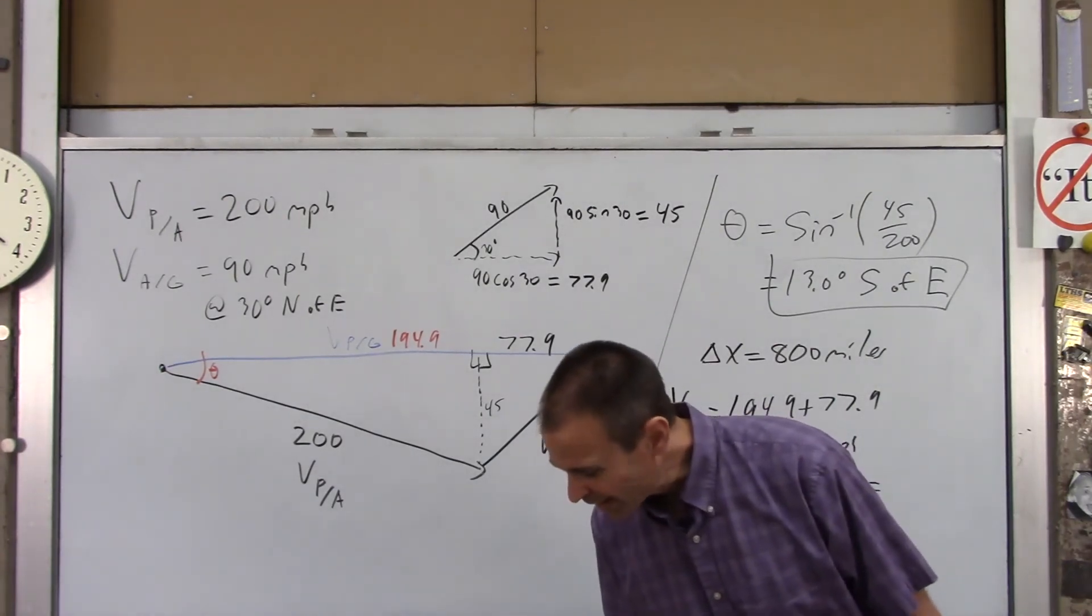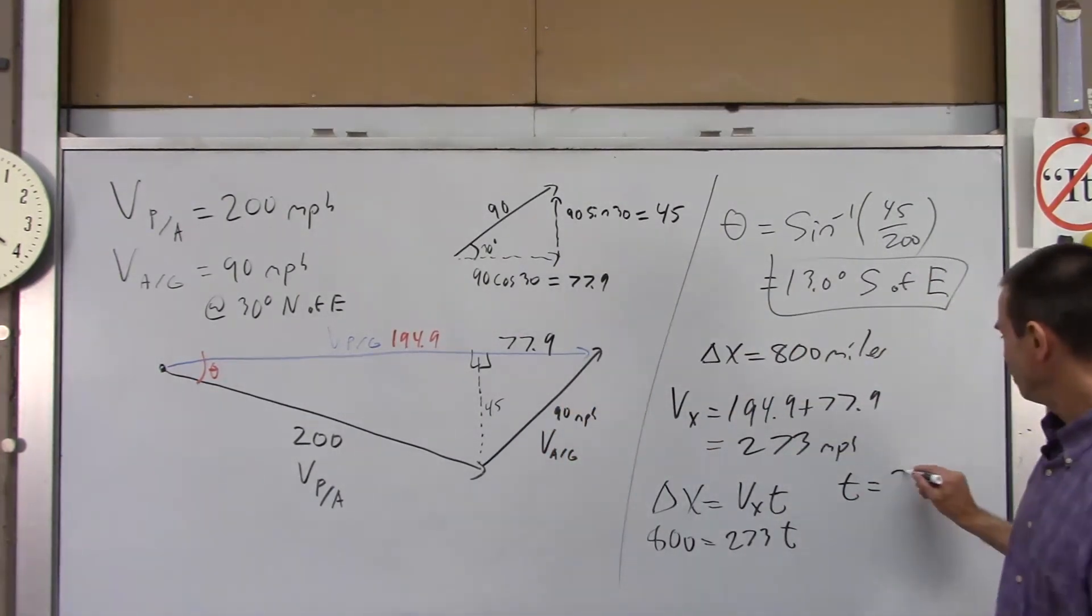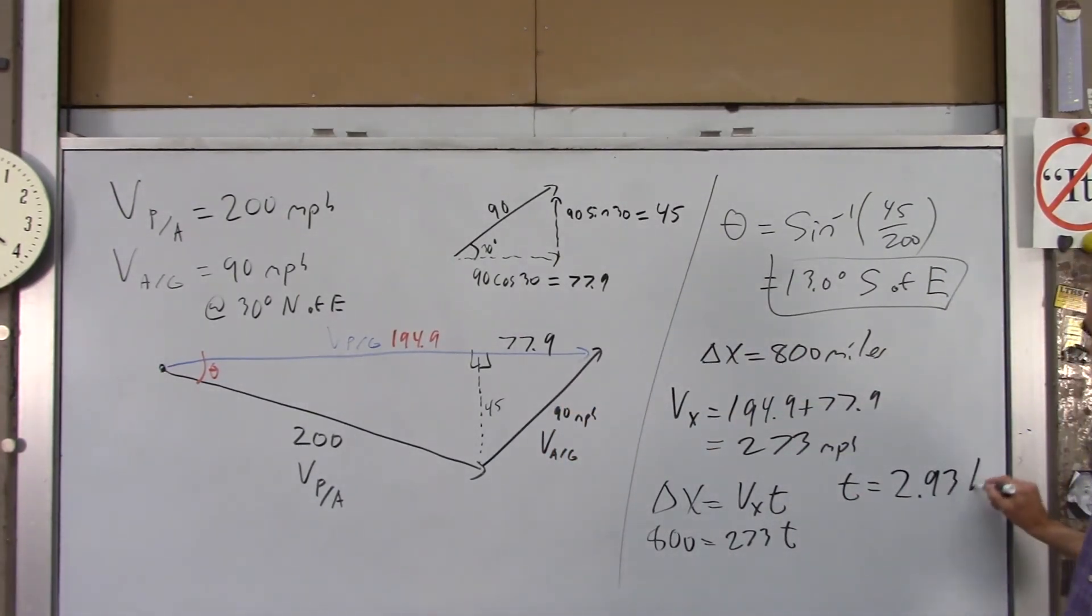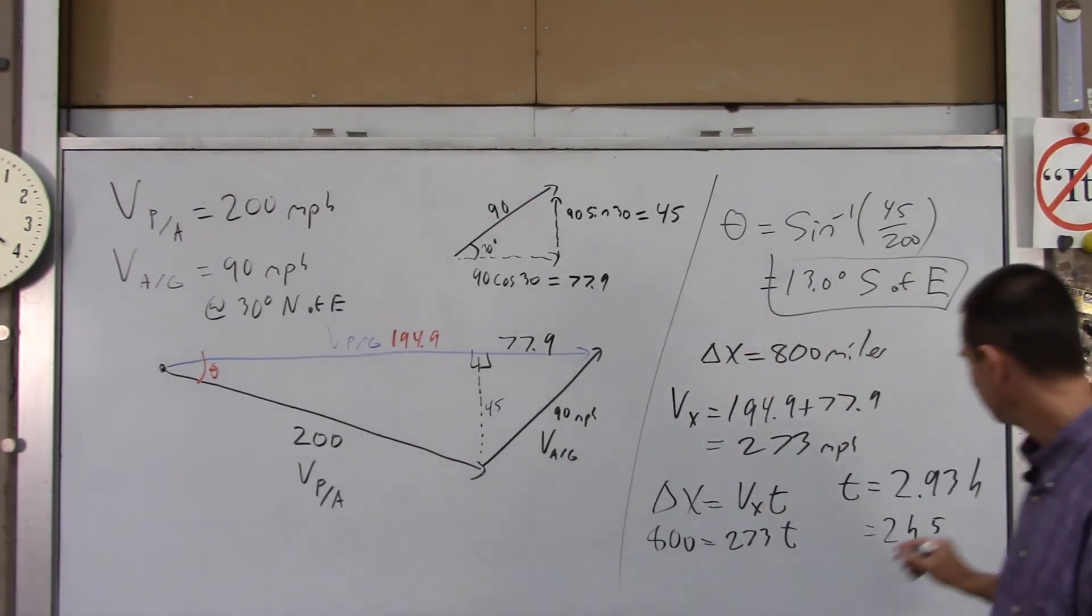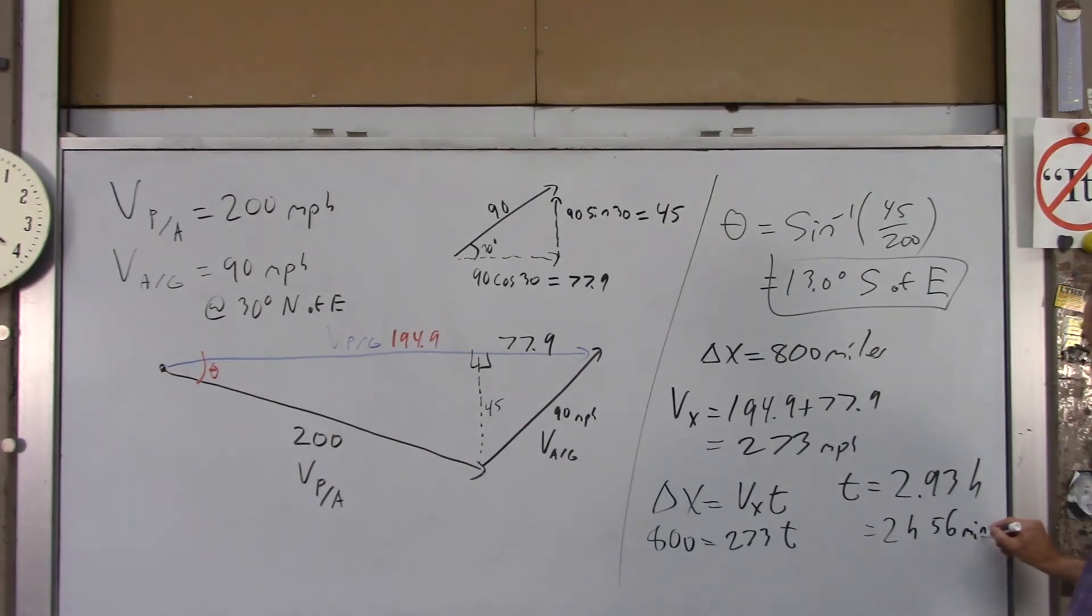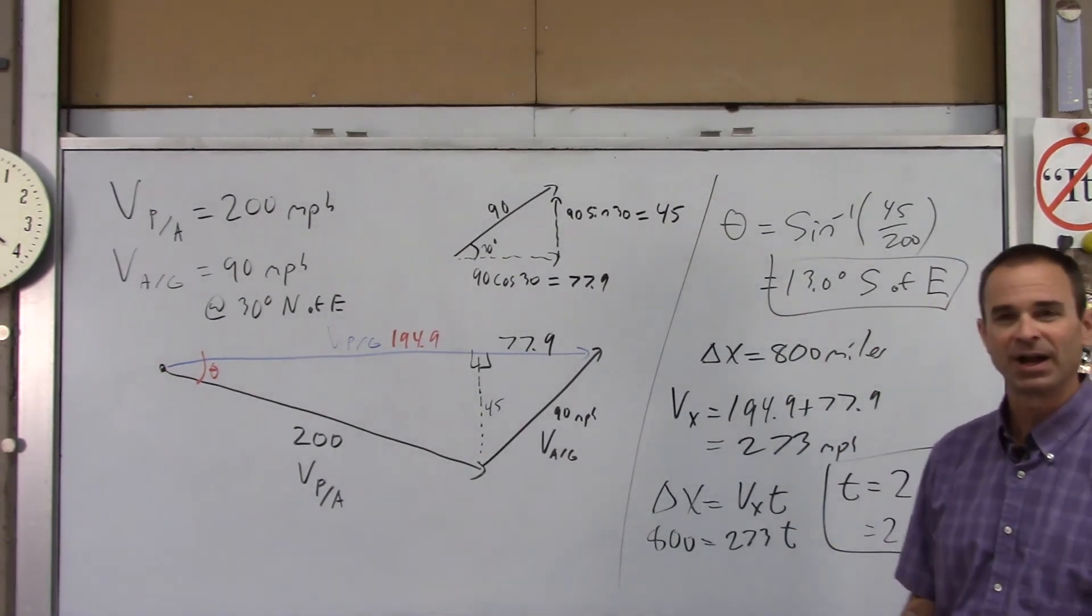If you solve for time, you're going to get, I got in my calculator, 2.93 hours, which equates to 2 hours and 56 minutes. So that's how long that pilot will take to fly 800 miles due east.